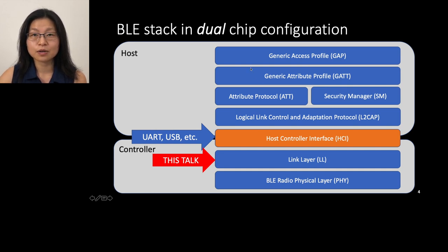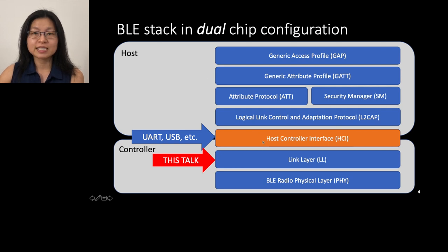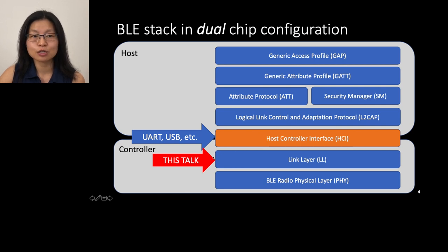Here is a BLE stack with many protocols. For the dual chip configuration, certain protocols belong to the host and two protocols belong to the BLE controller. The specification defines how the host-controller interface should be implemented. Through the HCI, hosts generate HCI commands to the BLE controller, and the BLE controller generates HCI events to send results back to the host. When you receive BLE packets, you also generate HCI events to the host.